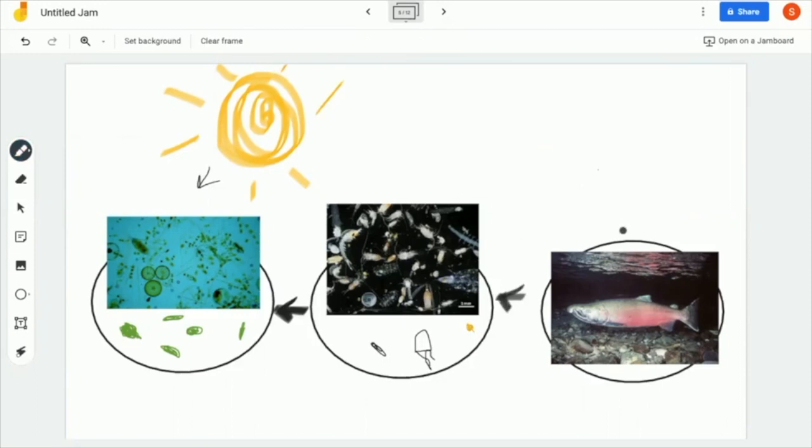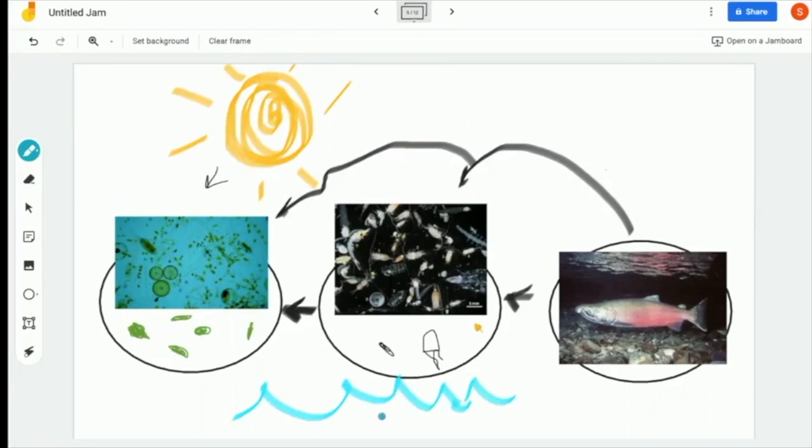So the salmon eat the zooplankton which then eat the phytoplankton in order to create what again? A healthy and wonderful ecosystem in the river. I'm going to draw a little smiley face so it can represent the river being happy or the Klamath River being happy.